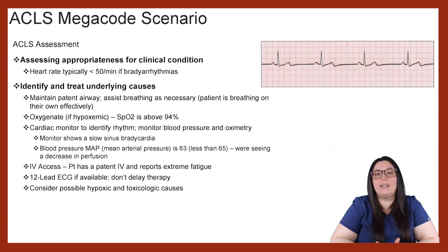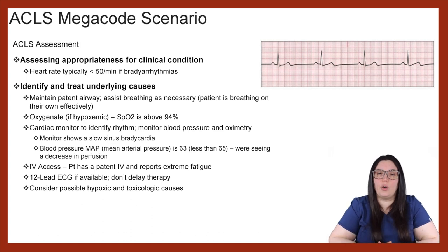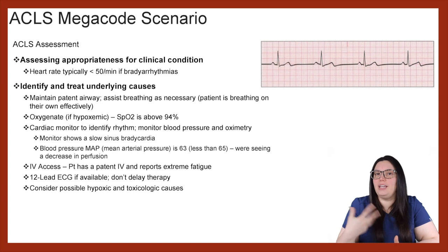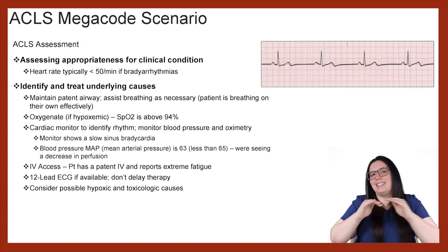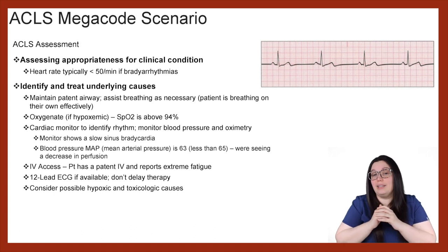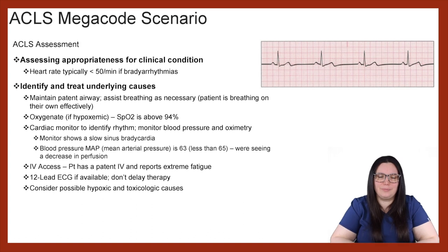We want to look at the cardiac monitor to identify the rhythm as well as monitor blood pressure and oximetry. The patient is in a slow sinus bradycardia. When it comes to our MAP — that's our mean arterial pressure — it's going to be 63 in this scenario, which is less than that 65 where we like it. So we know that there's some kind of decrease in perfusion taking place.